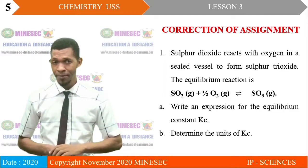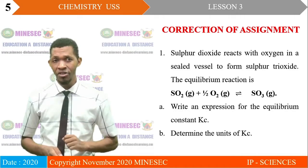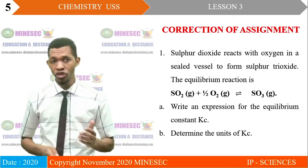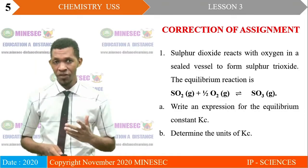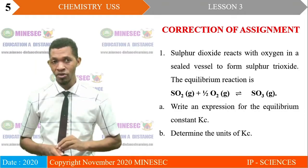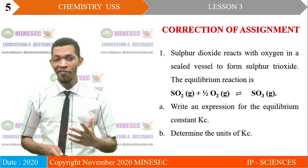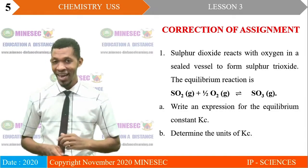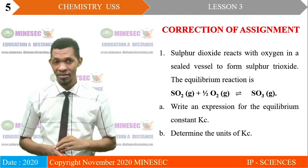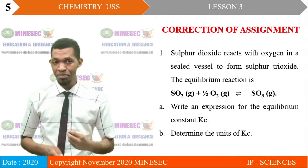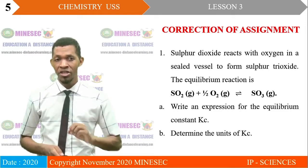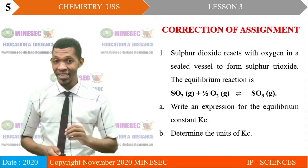Question 1. Sulfur dioxide reacts with oxygen in a sealed vessel to form sulfur trioxide. The equation of the reaction is: 1 mole of sulfur dioxide gas reacting with half a mole of oxygen gas are in equilibrium with 1 mole of sulfur trioxide gas. Part A: write an expression for the equilibrium constant Kc. Part B: determine the unit of Kc.